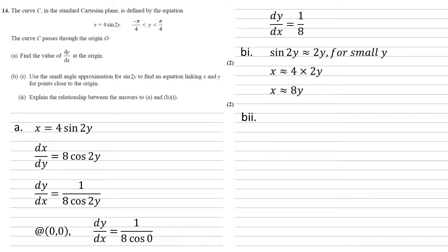For part 2, we need to explain the relationship between the answers to a and b part 1. We've just worked out that x is approximately equal to 8y. Rearranging that, we get that y equals x over 8, and we know from part a that dy by dx equals an eighth. So our dy by dx is just the gradient of the line y equals x over 8. Part a is the gradient of what we found in part b.